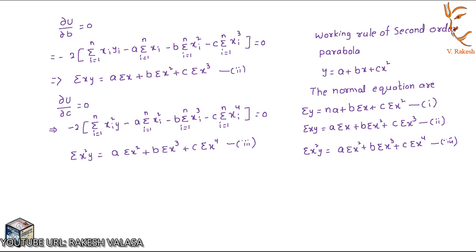Your doubt may be how to remember these formulas. Just see the parabolic equation y equal to a plus bx plus cx square. For the first equation, apply summation directly. For the second equation, multiply by summation x. For the third equation, multiply again by summation x, or equivalently multiply equation 1 by summation x square: summation x square y equal to a summation x square plus b summation x cube plus c summation x power 4.